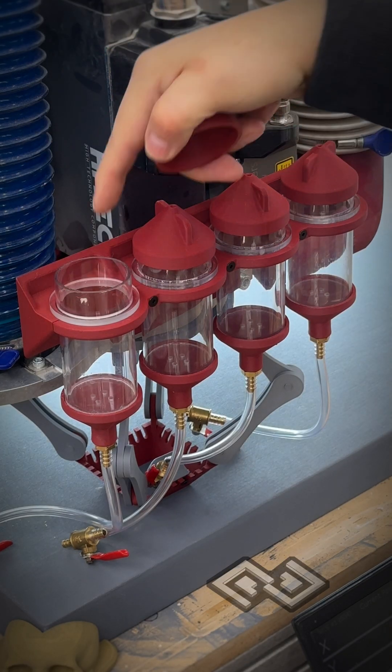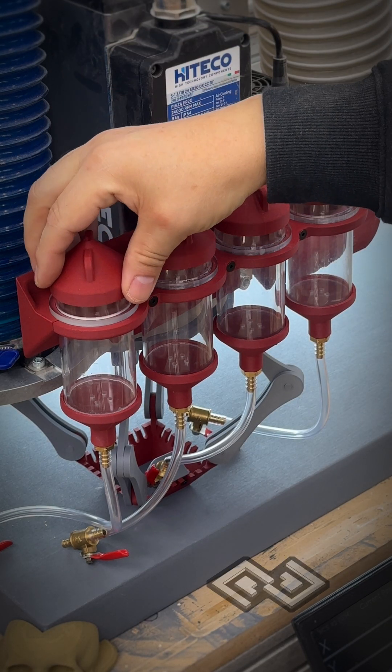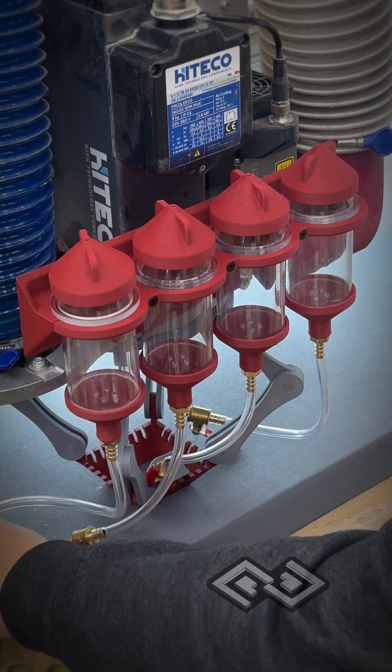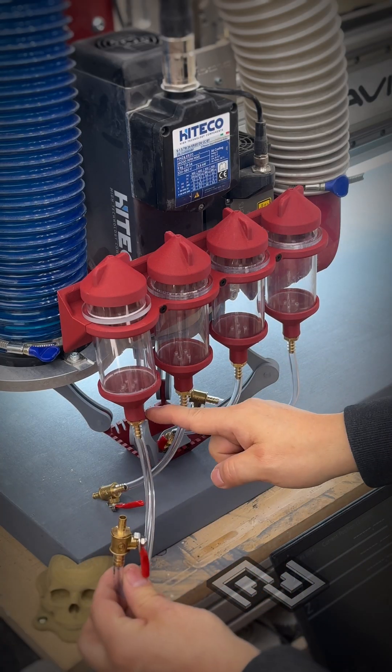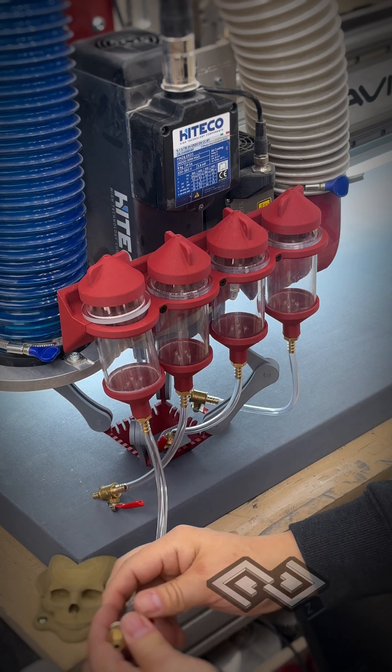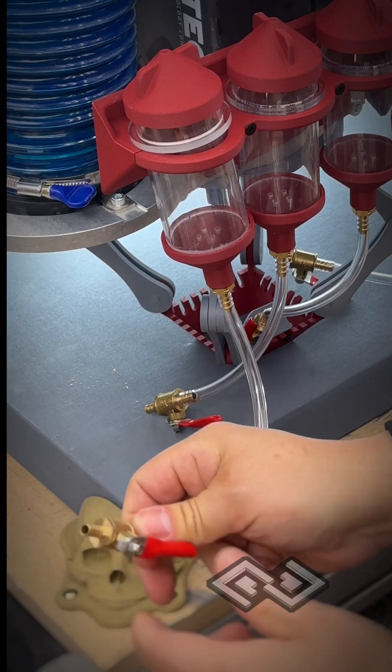So these are the paint reservoirs. This is where we're going to pour in all of the paint. We'll be able to do four colors or a couple colors in black and white or something like that. The paint drips down into these tubes, which goes through these valves.